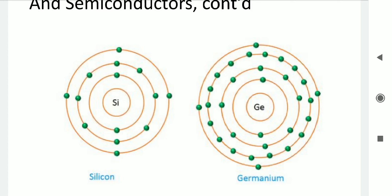The maximum number of electrons that can occupy the outermost orbit is 8. In silicon and germanium, there are 4 valence electrons in the last orbital path. An atomic structure with 4 valence electrons is classified as a semiconductor. If there are fewer than 4 valence electrons — 1, 2, or 3 — those materials are known as metals. If there are more than 4 valence electrons — 5, 6, 7, or 8 — those materials are known as insulators. This is how we classify materials based on the number of valence electrons.